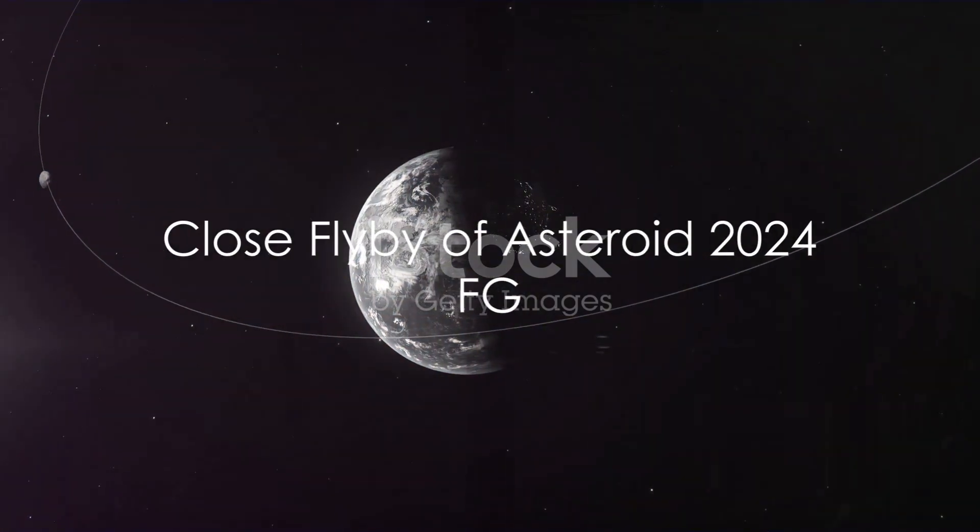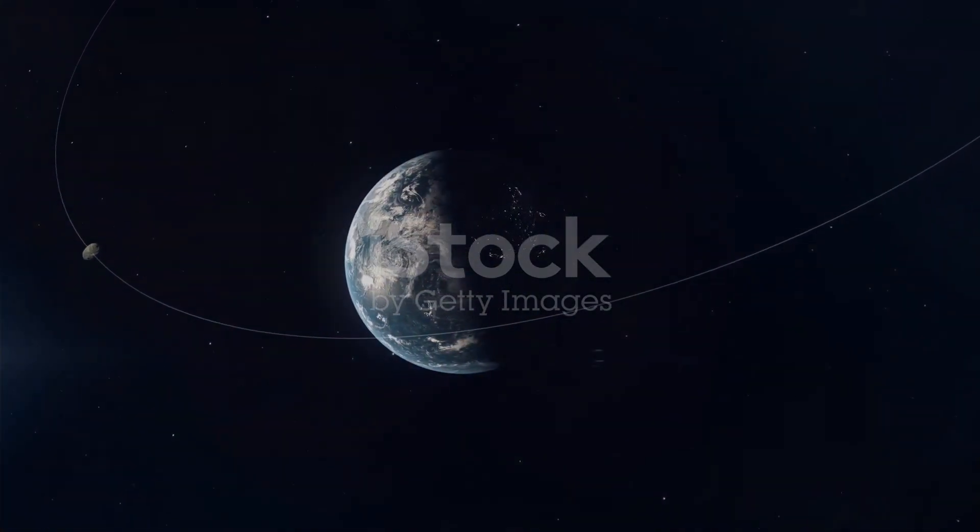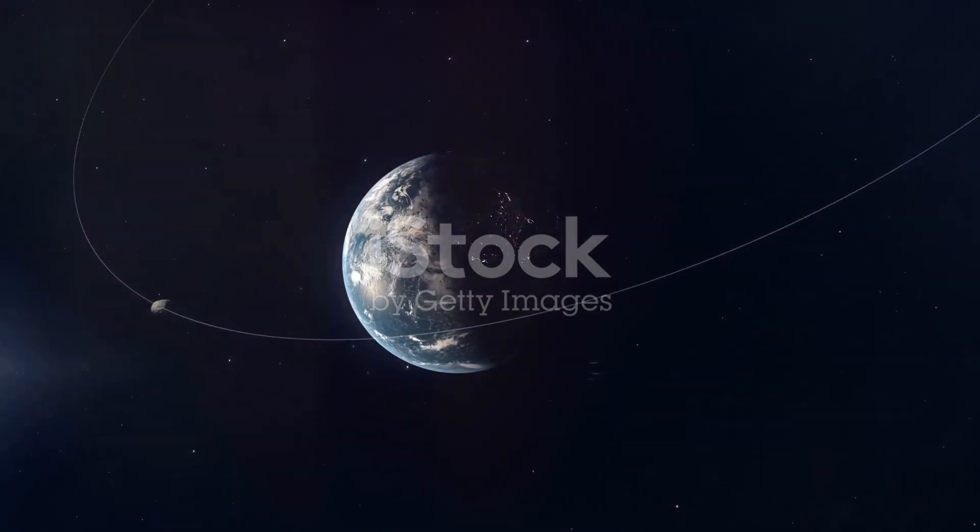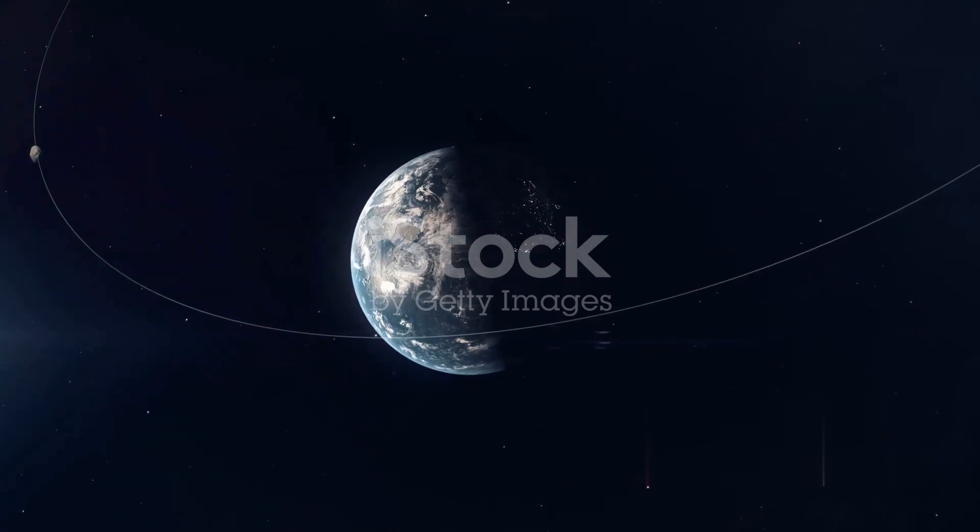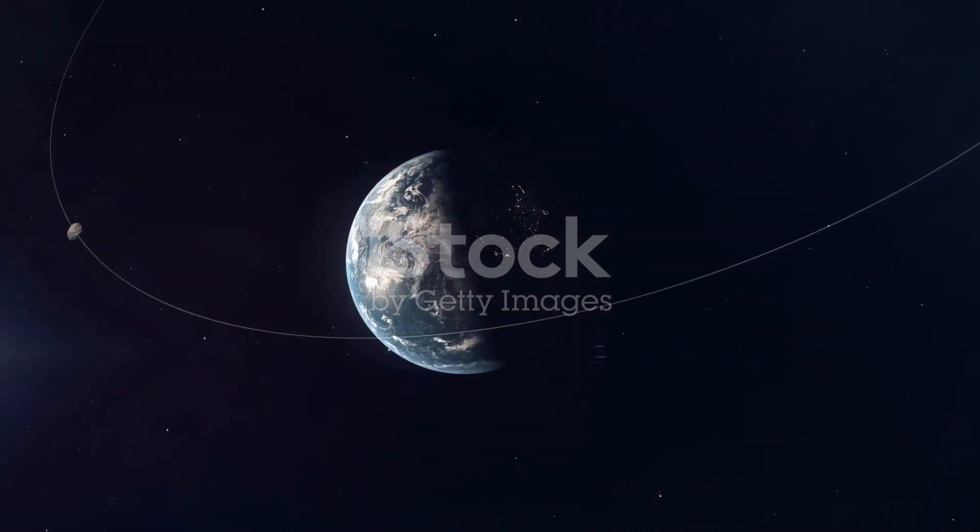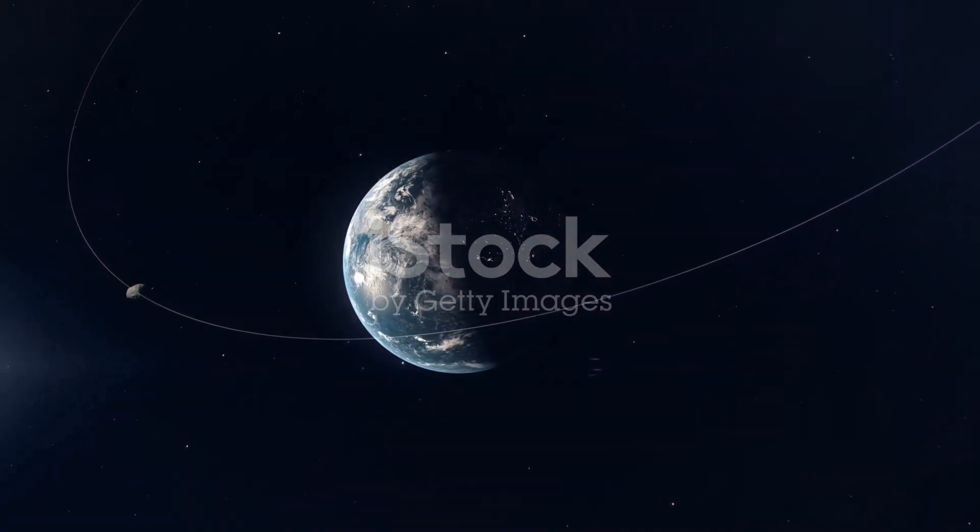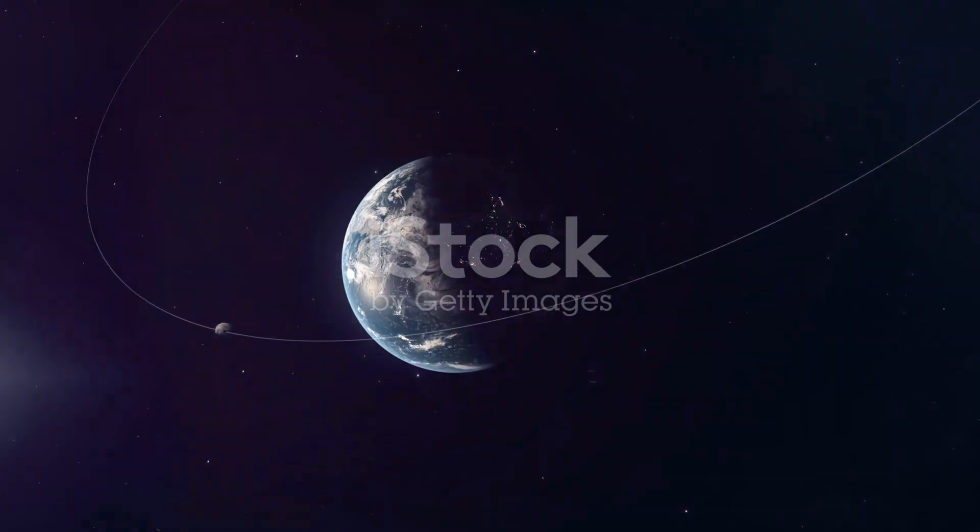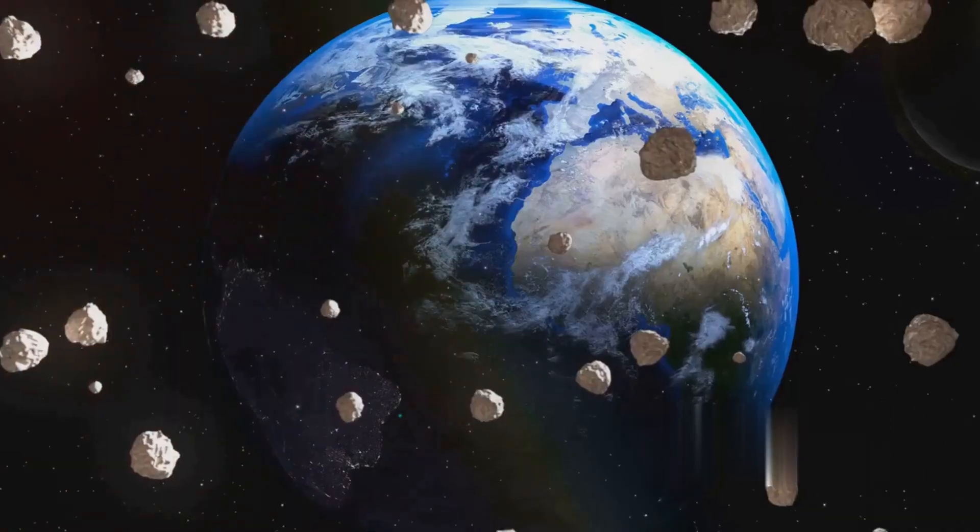What made 2024 FG rather interesting was its close flyby of Earth just two days after its initial spotting. It passed within approximately 205,000 miles of Earth's surface, a distance that is slightly less than the average distance between Earth and the Moon.